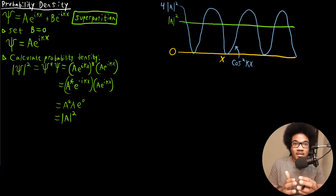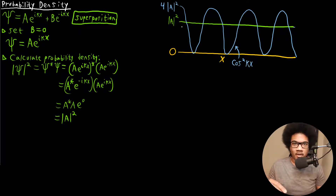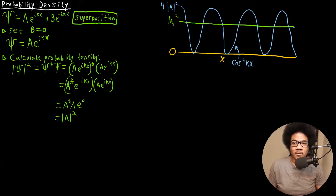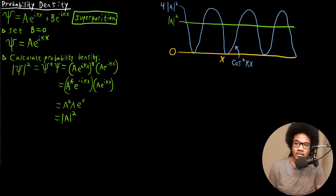This means the probability density is independent of x — we no longer have x in the expression. Graphically, at any point in space you would have a constant probability of finding the particle. That means you have absolutely no idea where the particle actually is. While this is a valid solution to Schrödinger's equation for the free particle, it doesn't give you all the proper physical properties of the free particle.